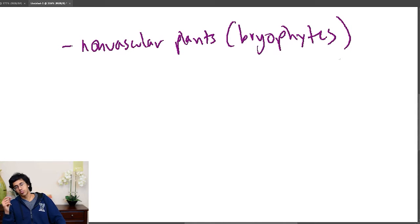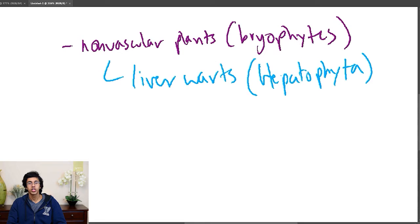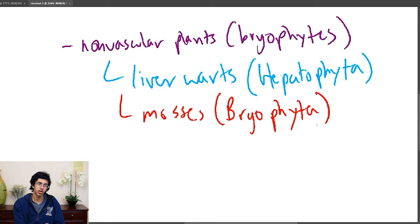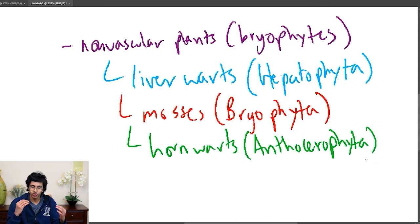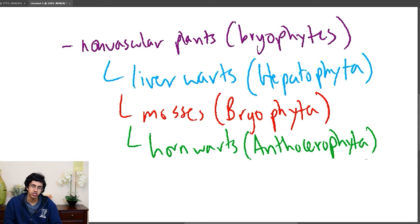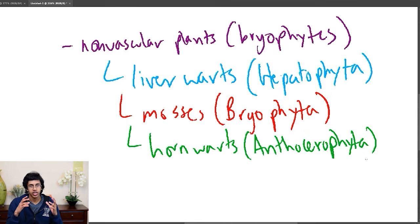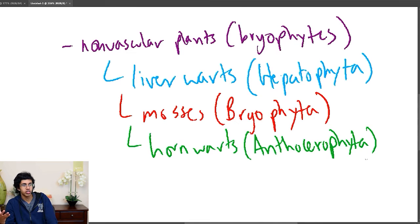You start with the non-vascular plants, the bryophytes, and those are the first things. They include the liverworts, also called hepatophyta. You also have mosses, which are called bryophyta, and then the hornworts, which are anthocerophyta. Those are all the non-vascular plants. What you have to know about these is that they don't have vascular tissues. The other important thing is that instead of having the sporophytes being the big plant, the gametophytes are the big-boy plants. So if a question asks what is the dominant stage in a bryophyte life cycle, the answer is gametophytes.